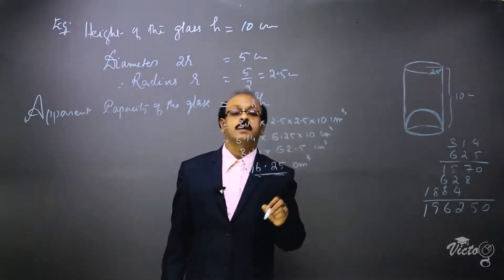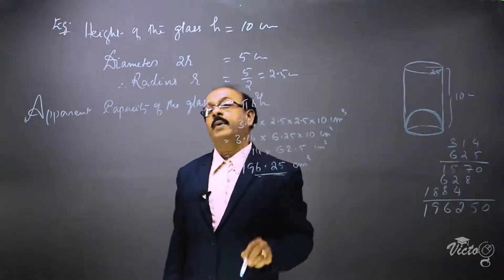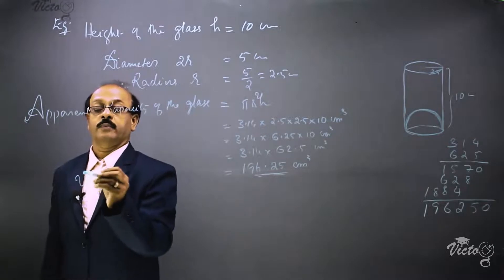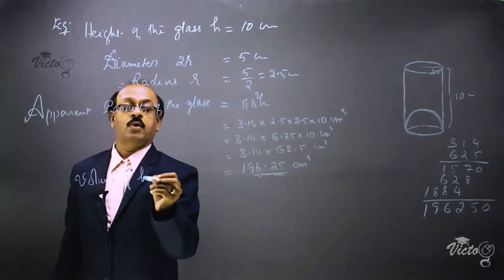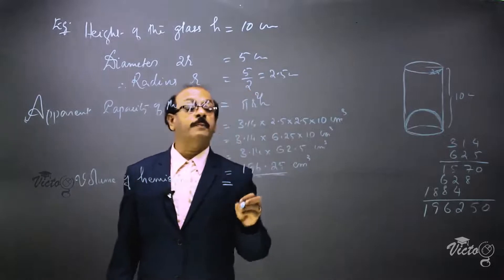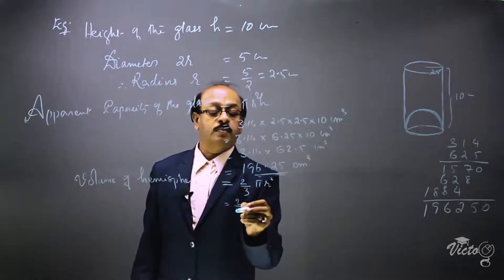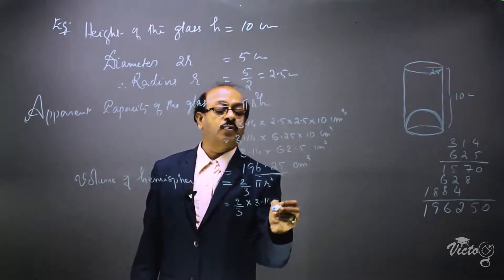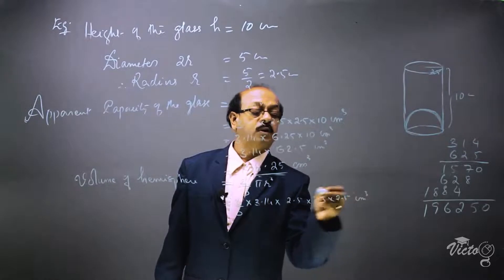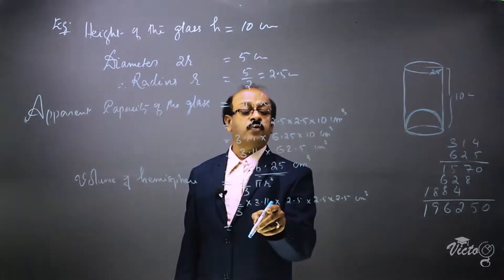For the actual capacity, we have to subtract the volume of the hemisphere from the apparent capacity. The formula for the volume of a hemisphere is 2 by 3 pi r cubed. This equals 2 by 3 into 3.14 into 2.5 into 2.5 into 2.5 centimeters cubed. We compute 25 into 25 giving 625, then 625 into 3.14 equals 196.25.